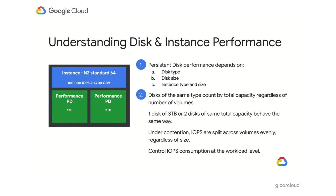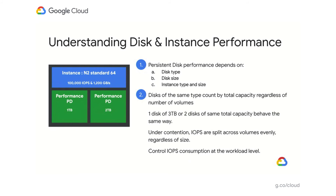Disks of the same type count by total capacity regardless of volume count. One disk of 3 terabytes or two disks of the same total capacity behave the same way. In this example, my two disks add up to the same capacity, and I will continue to have 90,000 IOPS. Under contention, the IOPS are split evenly across the volumes, regardless of size. If your workload has specific requirements for subcomponents or tasks, control the IOPS consumption at the workload level. PD disks of different types consume the same instance-level IOPS and throughput budget, so you need to watch for smaller jobs on PD standard consuming IOPS or throughput during spikes for the Performance PD-bound workload.